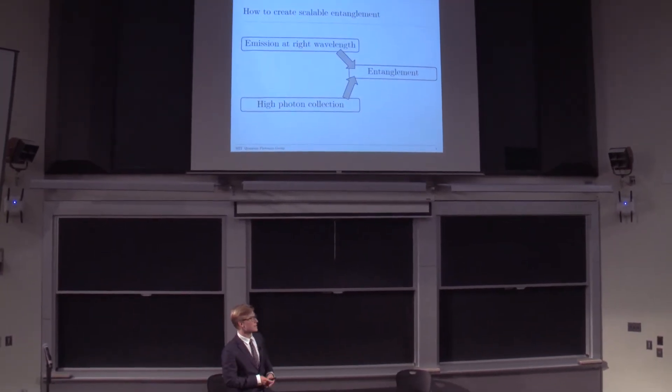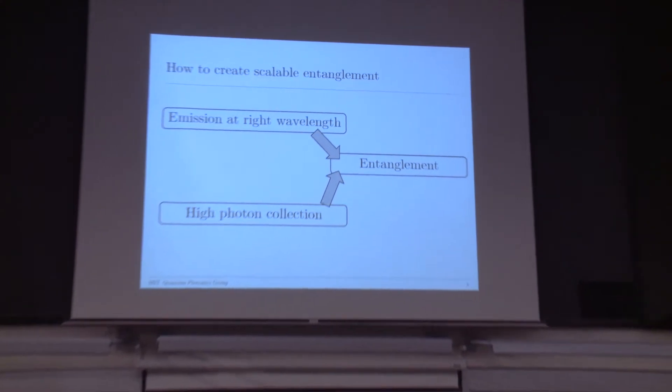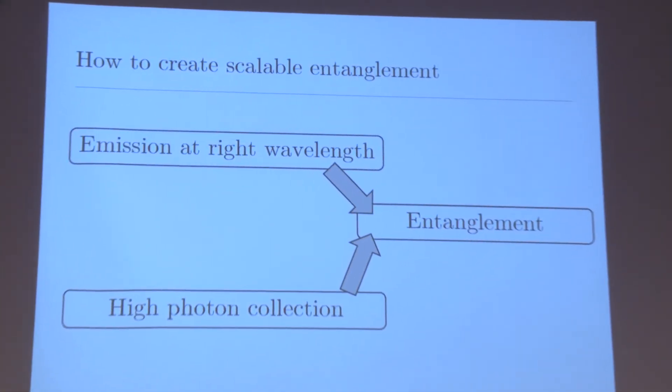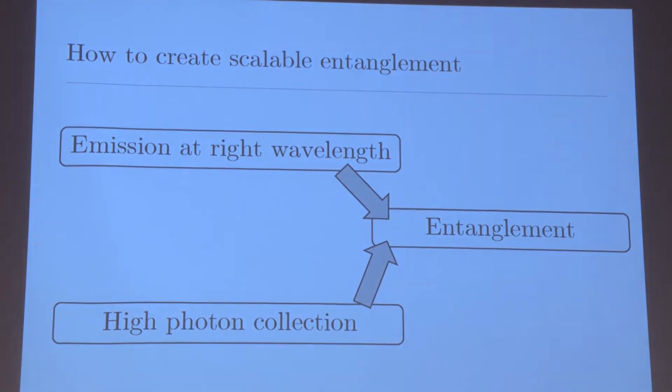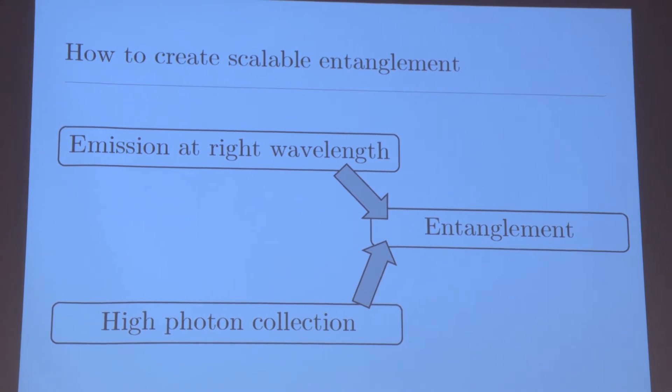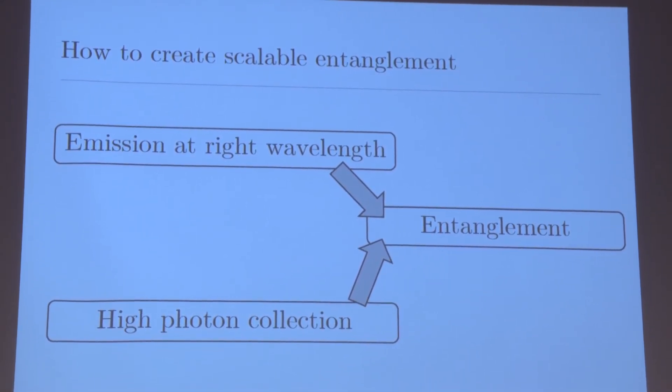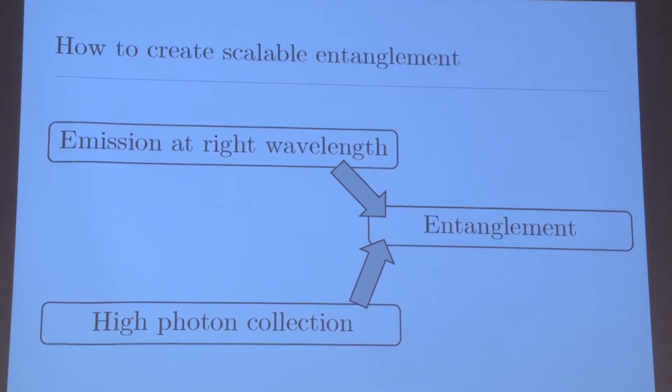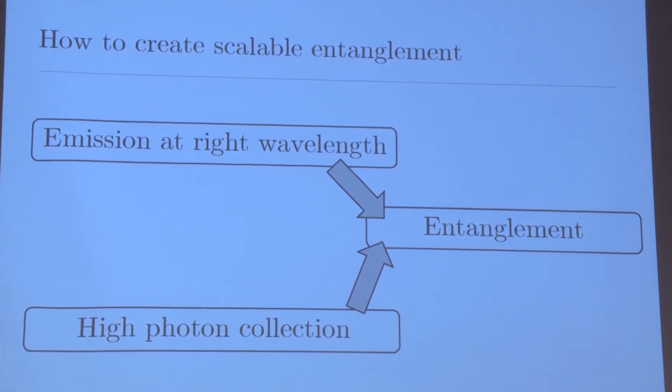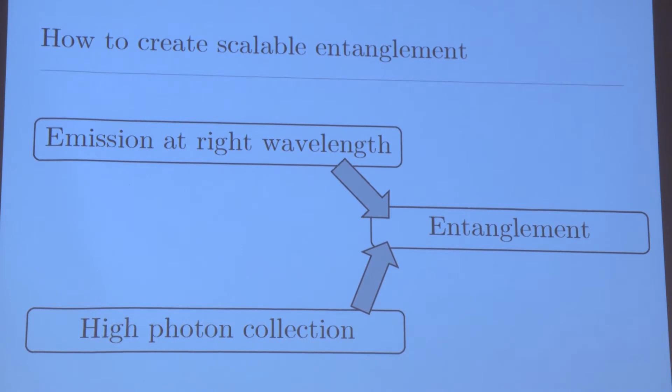However, it's not as easy as it sounds. We have two major issues with entangling the NV centers. On the one hand, the photon that is emitted needs to have one exact frequency, because we can only use one wavelength of the photon to do quantum entanglement. On the other hand, we need high collection efficiency, because what use is a photon with the right wavelength if you just lose it into free space instead of collecting it.